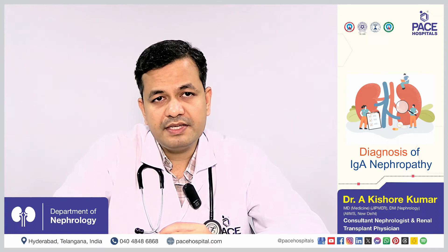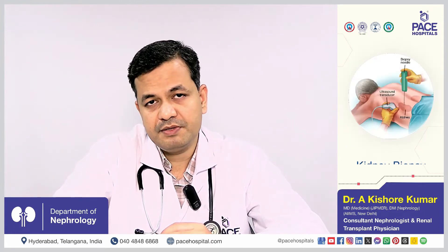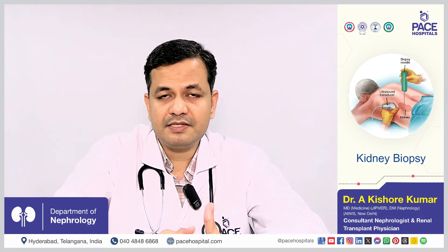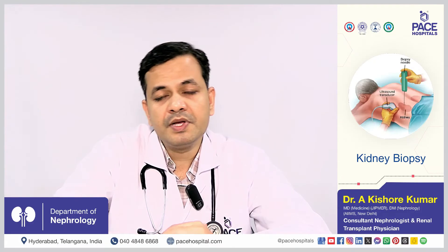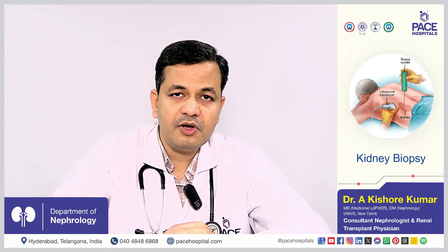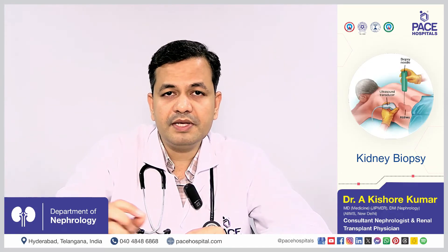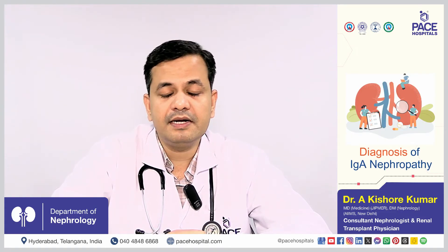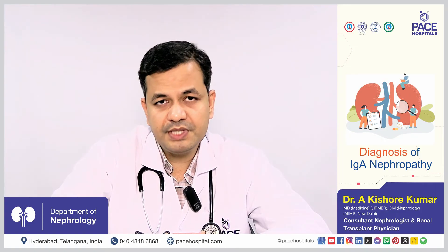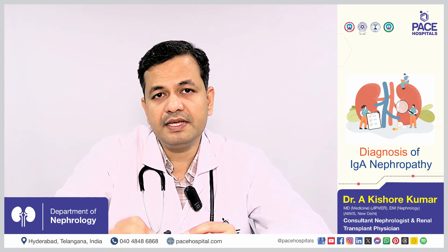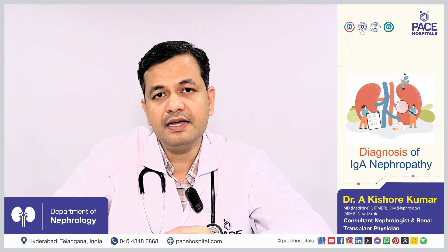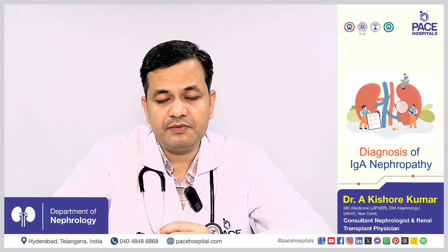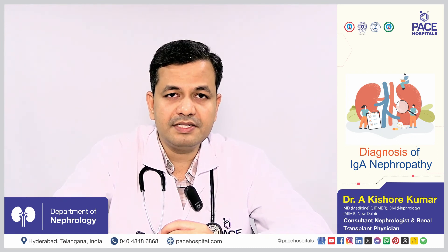The diagnosis of IgA nephropathy is a biopsy-based diagnosis, meaning we cannot diagnose IgA nephropathy just by blood tests or by scanning. We need a kidney biopsy, meaning we will have to remove a small piece of kidney tissue and examine it under a microscope with a variety of stains to identify whether that IgA antibody is deposited in the kidney causing damage or not. If that is present, then we will diagnose IgA nephropathy.